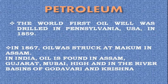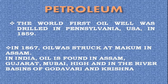The world's first oil well was drilled in Pennsylvania, USA in 1859. Eight years later, in 1867, oil was struck at McCom in Assam. In India, oil is found in Assam, Gujarat, Mumbai High, and in the river basins of Godavari and Krishna.